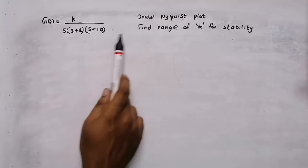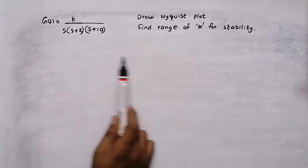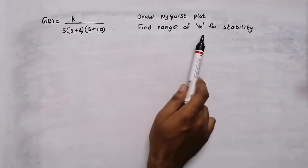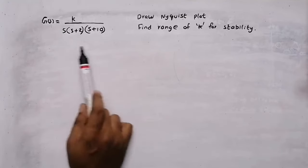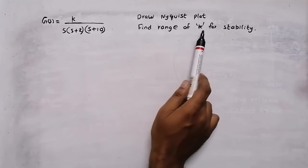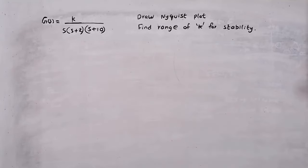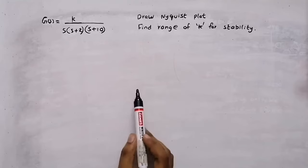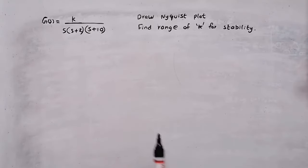In this video, we need to draw the Nyquist plot of this system and we need to find the range of k — k is our gain — we need to find the range of k for making the system stable. If you are watching this video for the first time, please watch the previous video and make your base strong.